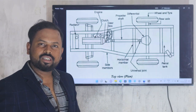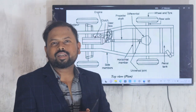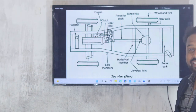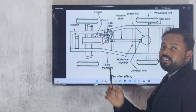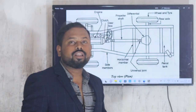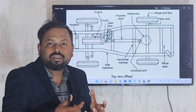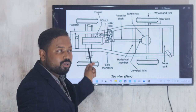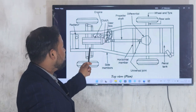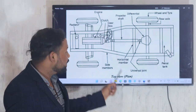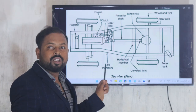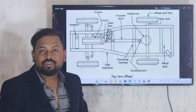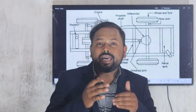Now we are going to discuss the power transmission system of an automobile. Power is generated at the engine — the engine consumes fuel, and by combustion of the fuel it gives an output in the form of rotation of the crankshaft. So the engine produces power and the output is the rotation of the crankshaft inside the engine.